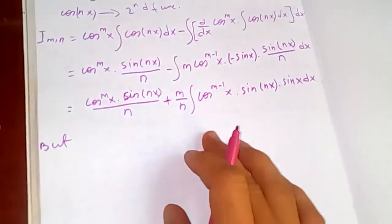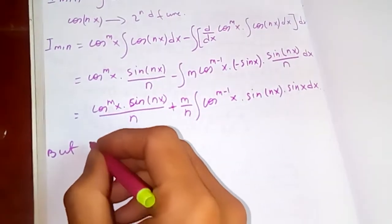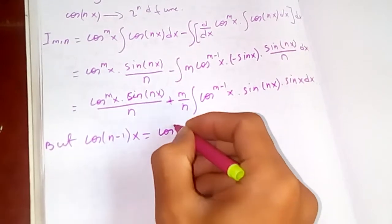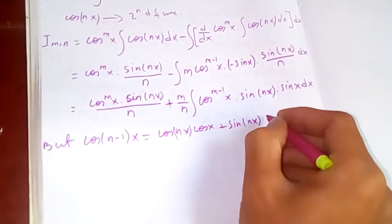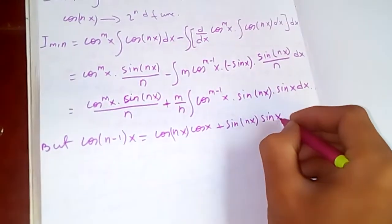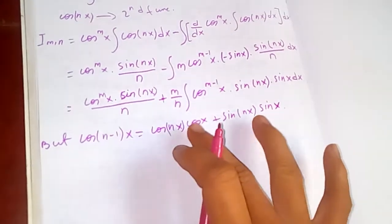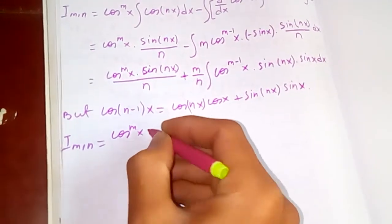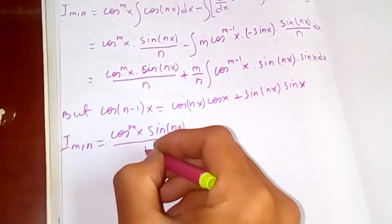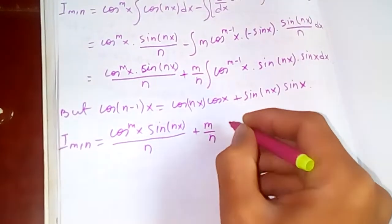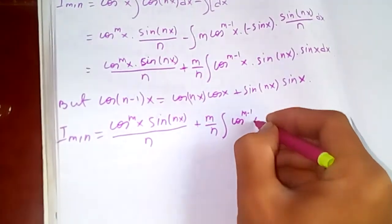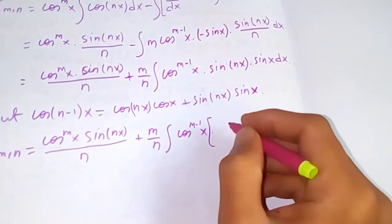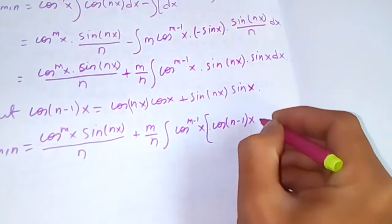In trigonometry we have the identity: cos(n-1)x = cos(nx)·cos(x) + sin(nx)·sin(x), applying the cos(A-B) formula. So I_{m,n} turns out to be plus m/n times the integration of cos^(m-1)(x) · sin(nx) · sin(x), and in place of sin(nx)·sin(x) we can substitute using this identity.